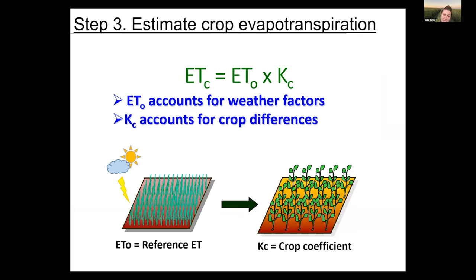Calculating evapotranspiration is relatively easy because you need two main parameters: one is the reference evapotranspiration, ET0, and the other is the crop coefficient. Reference evapotranspiration is basically a measure of how hot and dry an environment is. The concept is that water placed outside on a hot day in August will evaporate faster than on a humid April day. So reference ET accounts for the environment, while the crop coefficient accounts for crop-specific characteristics. We'll have a different crop coefficient for each species.